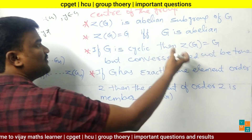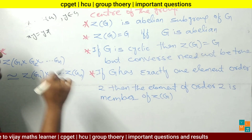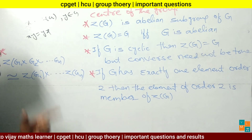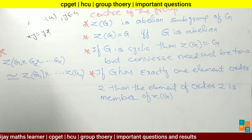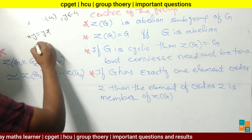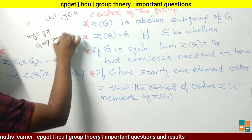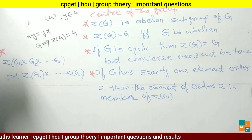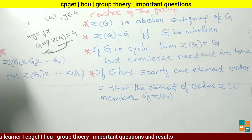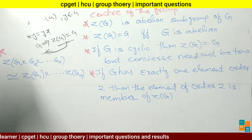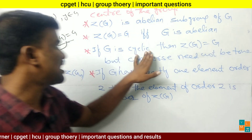Third point: if G is a cyclic group, then Z(G) equals G. However, the converse need not be true — meaning if Z(G) equals G, then G is not necessarily cyclic. This third point is most important.